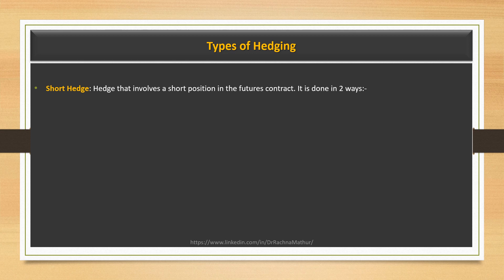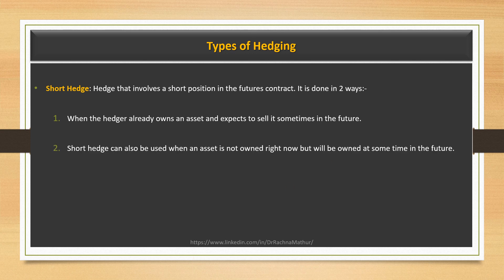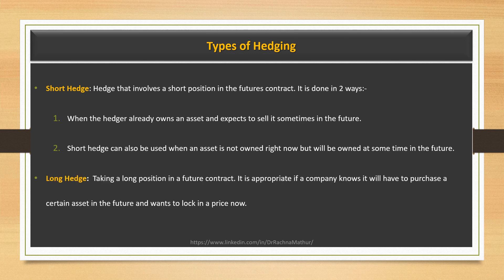A short hedge involves taking a short position in a futures contract. It is done in two ways. First, the hedger already owns the asset at a lower price and expects to sell it in the future when the price goes up. Second, short hedging can be used when the asset is not owned right now but will be owned at some point in the future — this is short selling, where you borrow the asset, sell at a high price, and when the price goes down, buy back the asset and book the profit. A long hedge involves taking a long position in a futures contract, appropriate when an investor or company knows it will need to purchase a certain asset in the future and wants to lock in the price now.